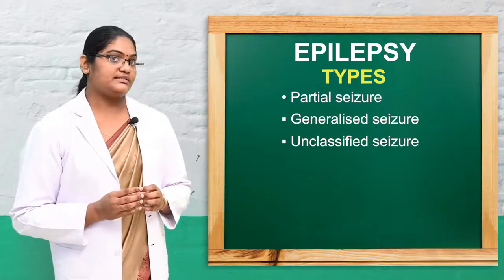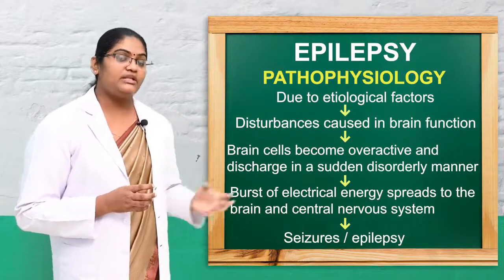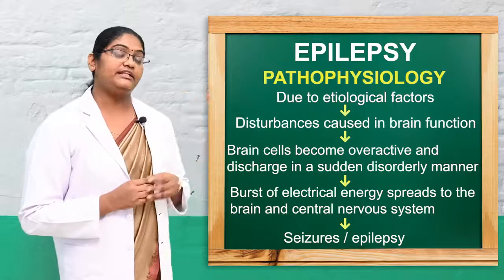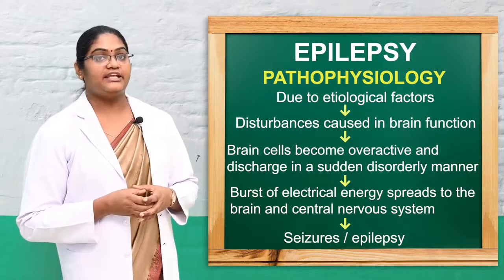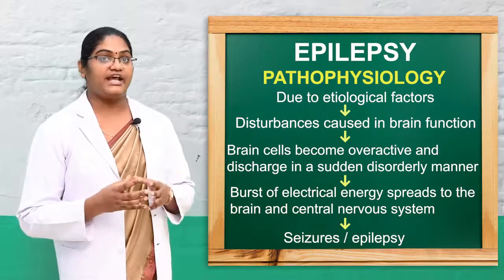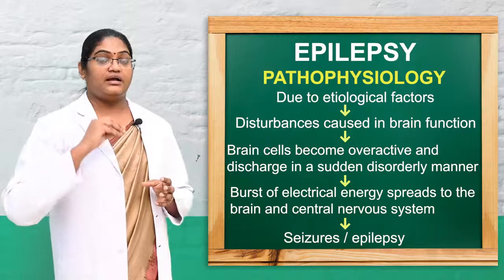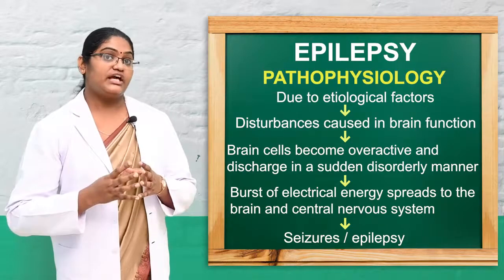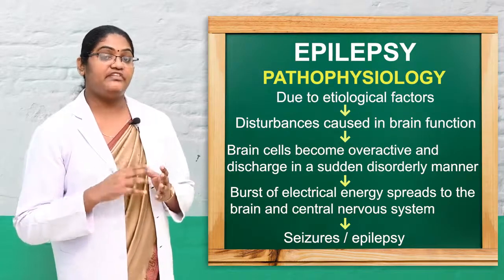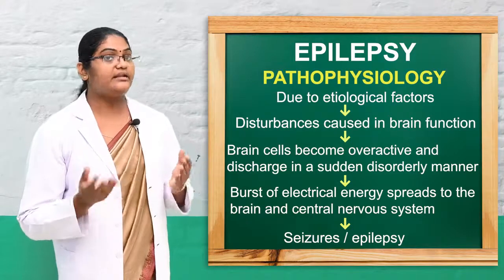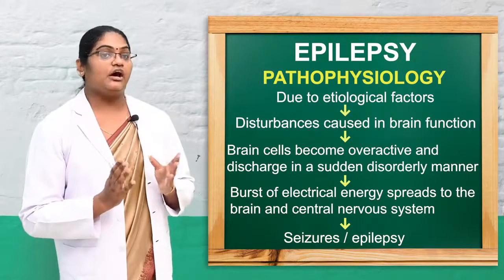Next we can discuss the pathophysiology of seizure. Due to the etiological factors already discussed, these causes lead to disturbances in the normal function of the brain. The brain cells become overactive, producing sudden and violent abnormal symptoms. The signal becomes abnormal, leading to a burst of electrical energy that reaches the nearby central nervous system and brain — resulting in a seizure.